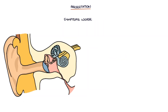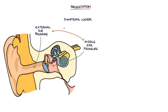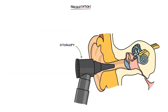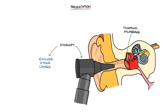Symptoms tend to get worse when the external air pressure changes and the middle ear pressure cannot equalize to the outside pressure. This may happen, for example, during air travel when the airplane is rising, climbing a mountain, or when scuba diving. Otoscopy, to visualize the tympanic membrane, may appear normal, but it's important to do this in order to exclude other causes — for example, a middle ear infection or otitis media.